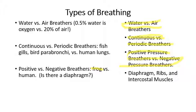All mammals are negative pressure breathers. They all have a rib cage which expands the size of the lungs and pulls air in.